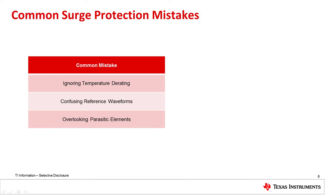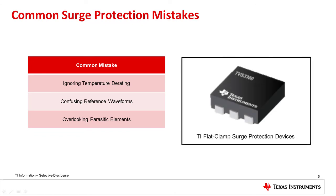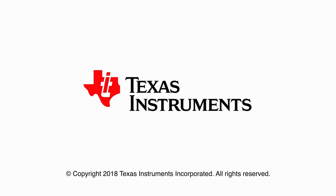If these three mistakes are avoided during TVS selection, it will lead to a more robust and effective surge protection stage. The limitations and concerns that have been discussed are inherent to all diode structures, so if a design needs more precise protection, it is necessary to move to a different protection topology. That's where TI's flat clamp surge protection, which will be discussed in the next video, can help solve the problem. Thank you for watching.